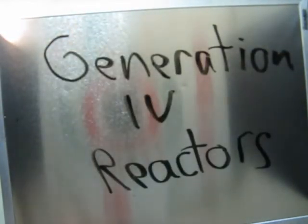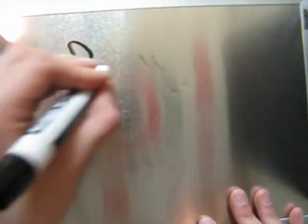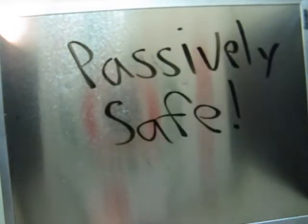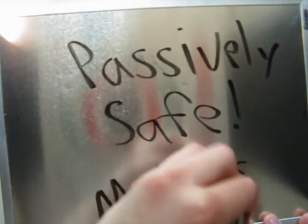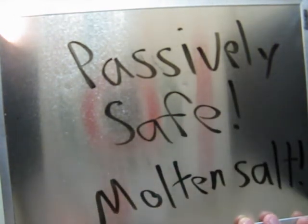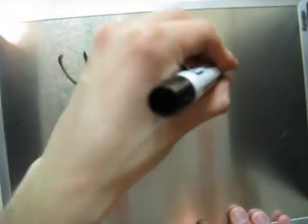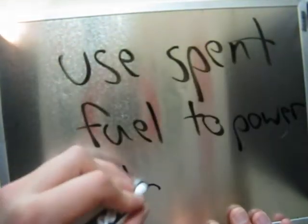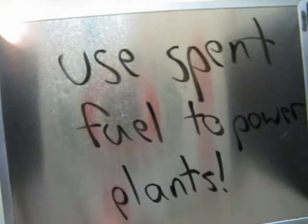Now, a really cool thing are Generation 4 reactors. Generation 4 reactors use things like passive safety features and molten salt as one of the coolant features. So they're pretty advanced and they're really safe. They also do cool things like they use spent nuclear fuel to power themselves.